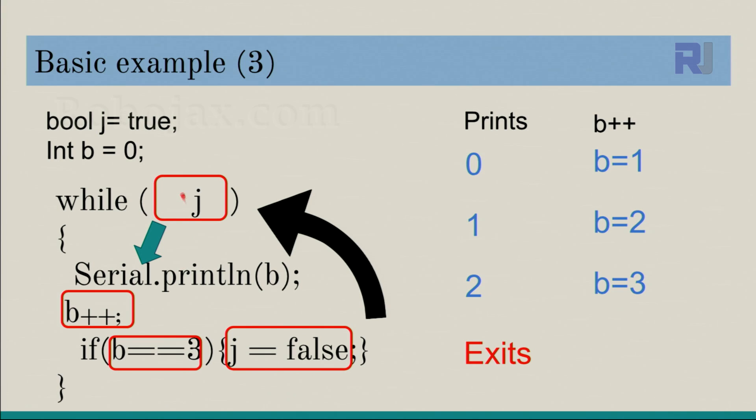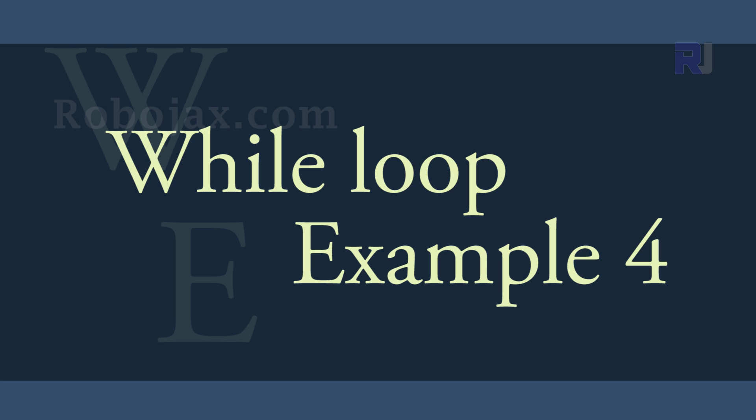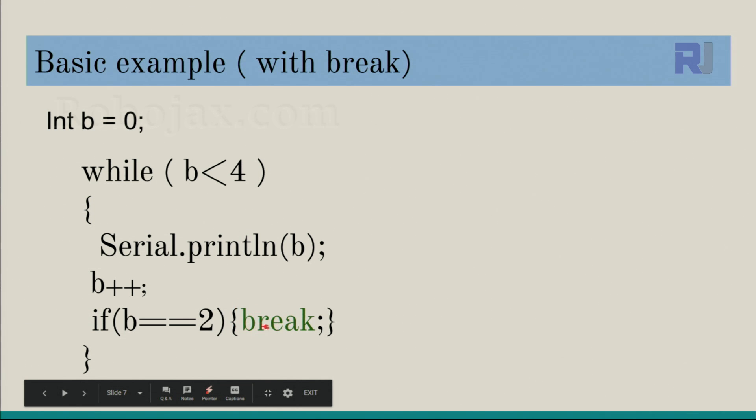This time we are using a new syntax, break, in order to break the code regardless of this condition. Let's check it. We have b equals zero, and b is smaller than four, it's true. This will print it and b becomes one. This is not true, will not execute it. B one is smaller than four, print, become two. Now is b equals two? Yes. Break. Break means do not go there. Immediately the code will exit from the loop and proceed to the code after this curly brace.